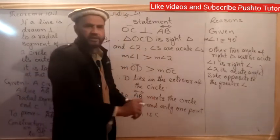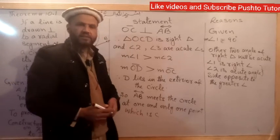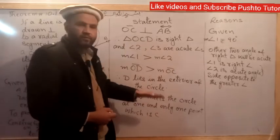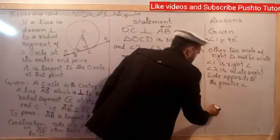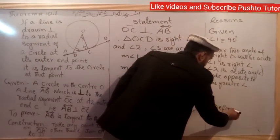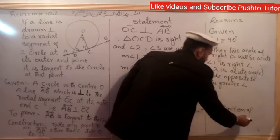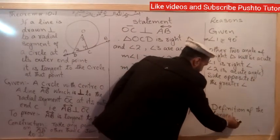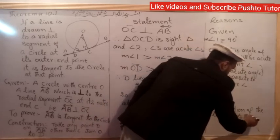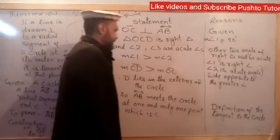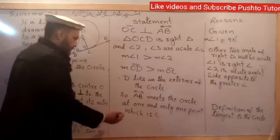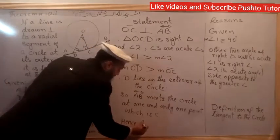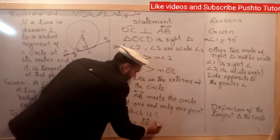By the definition of tangent: the tangent definition says a line which touches a circle at only one point. Now this satisfies the definition of the tangent to the circle — this line touches the circle at only one point, which is C. Hence, AB is tangent to the circle.